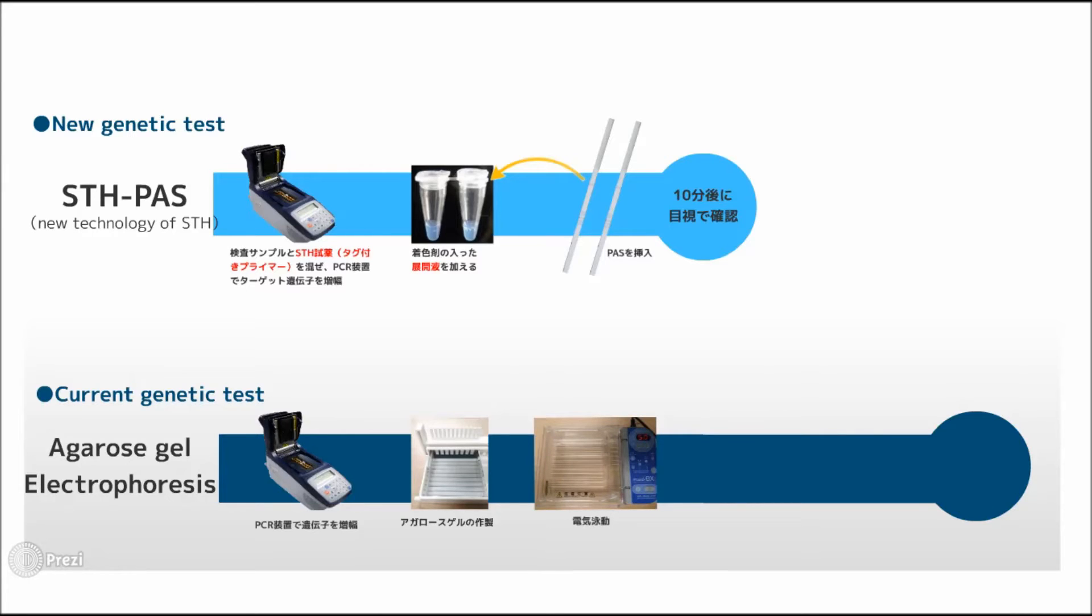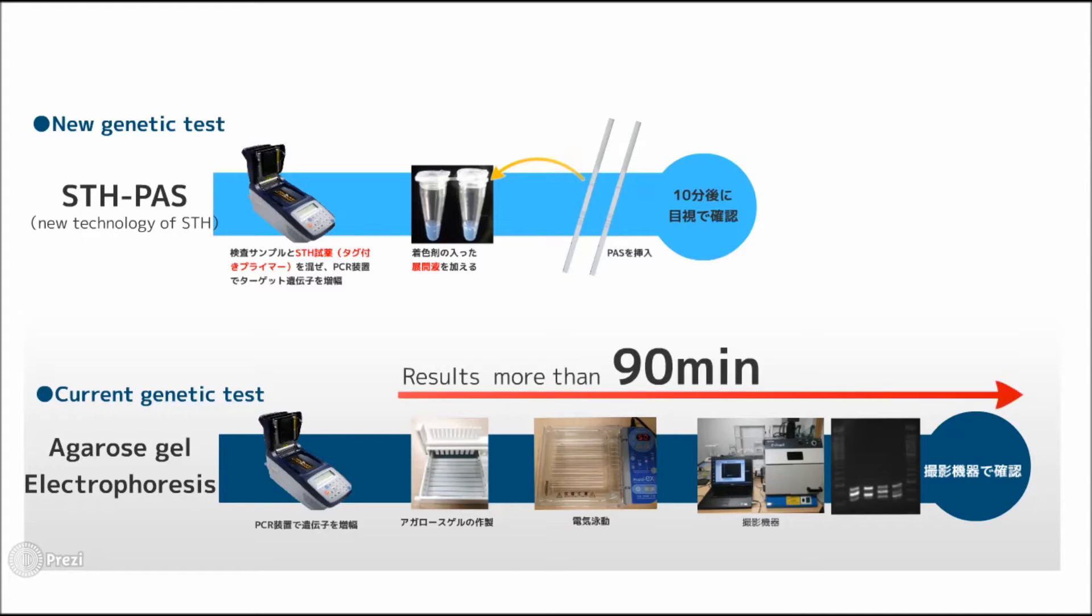We make agarose gel. We apply electrophoresis. We color the DNA and confirm it with a photographing device. It takes more than 90 minutes to get results using this agarose gel electrophoresis method.